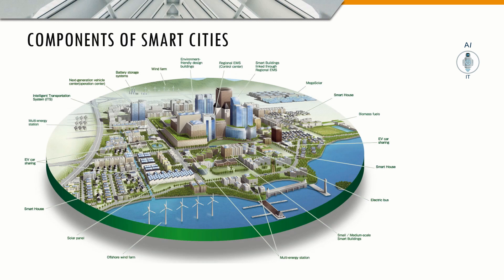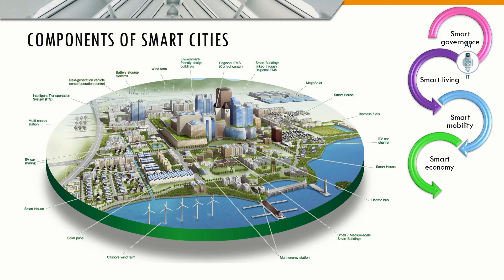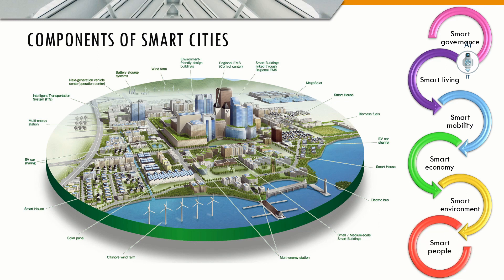Now let us see the components of smart cities. The first component is smart governance. The second component is smart living. The third component is smart mobility. The fourth component is smart economy. The fifth component is smart environment. And the sixth component is smart people.